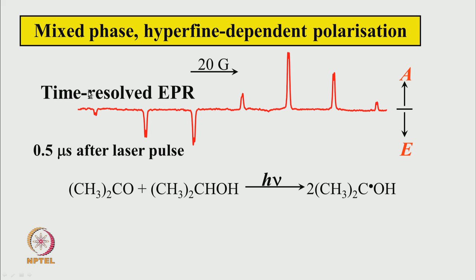The example is shown in the slide. This is the familiar acetone-isopropanol experiment. In the presence of UV light, it produces an identical pair of radicals. When done in direct detection mode, the time-resolved EPR spectrum after 0.5 microseconds shows this pattern: low field lines are emissive and high field lines are absorptive. There is no relation to the thermal EPR signal, where the middle line is expected to be most intense.